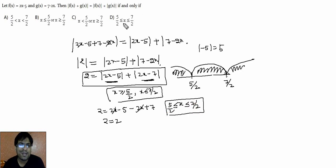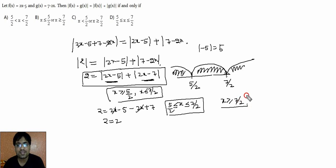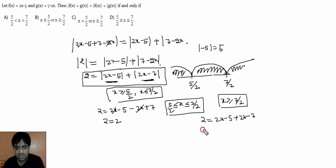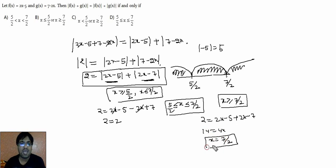You can directly mark D as your answer now, or verify further. When x ≥ 7/2, both mods open positively: 2 = (2x-5) + (2x-7) → 14 = 4x → x = 7/2. So only x = 7/2 satisfies the condition in this range, which is already included in D. Similarly, x = 5/2 satisfies the condition and is the boundary of the interval.